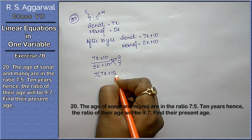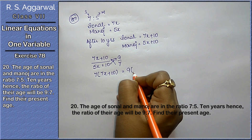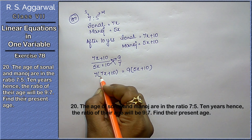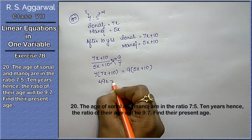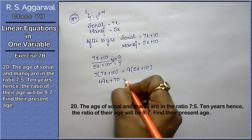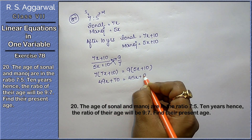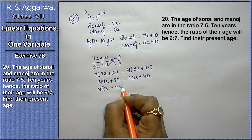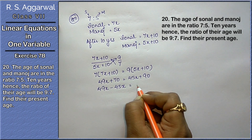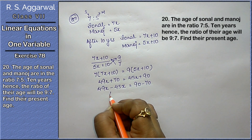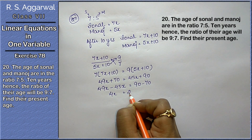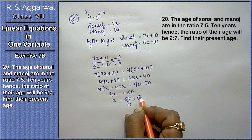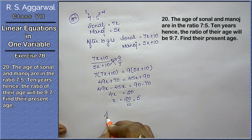By cross multiplication: 7 times (7x plus 10) equals 9 times (5x plus 10), giving 49x plus 70 equals 45x plus 90. Bringing x terms to one side: 49x minus 45x equals 90 minus 70, that means 4x equals 20.